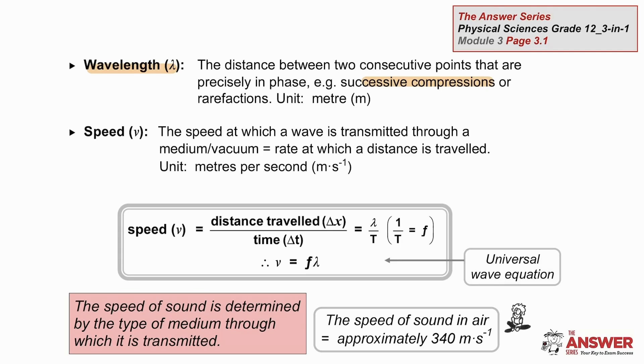Generally, speed equals distance over time. If we take the distance to be a wavelength and the time to be a period, then speed equals wavelength over period. But period is the inverse of frequency. So speed is also wavelength times frequency, which gives us the universal wave equation.